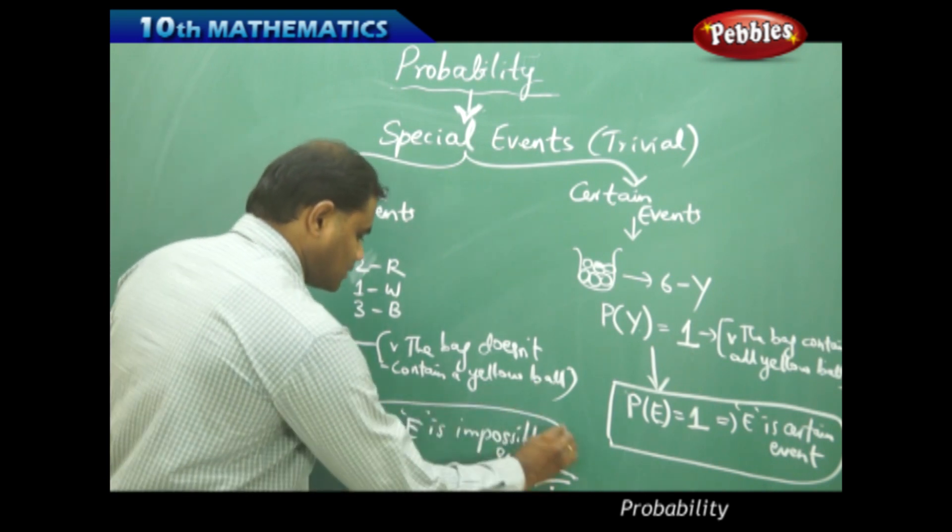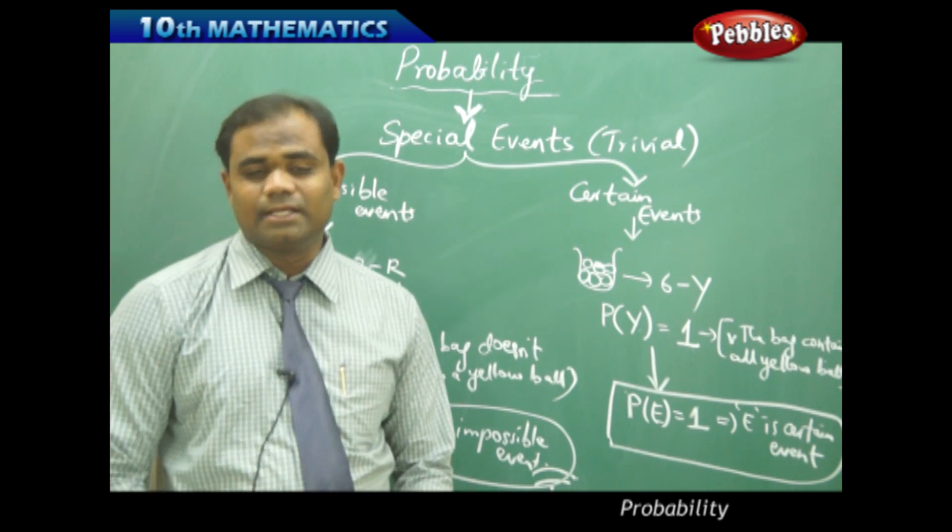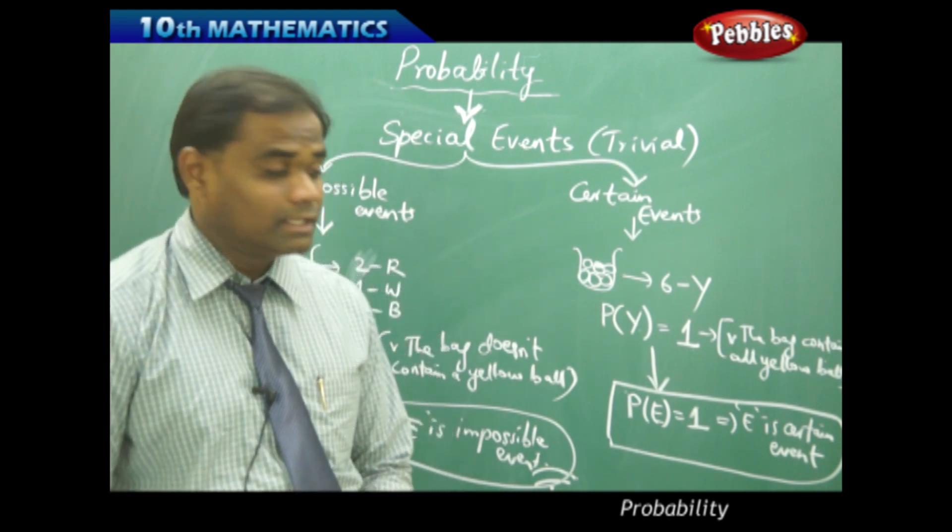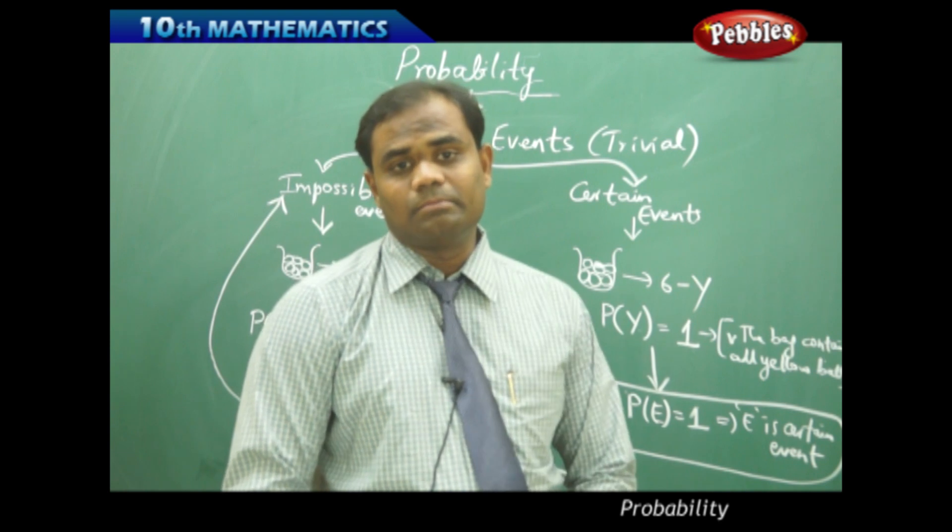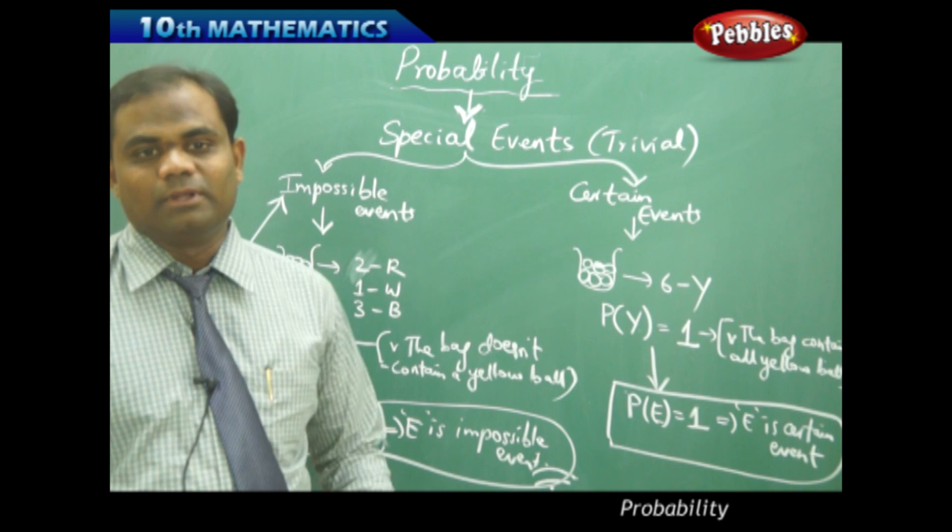This is how we understand the difference between impossible and certain events. P(E) equal to zero implies E is an impossible event mathematically. P(E) equal to one implies E is a certain event with their own respective mathematical formulae.